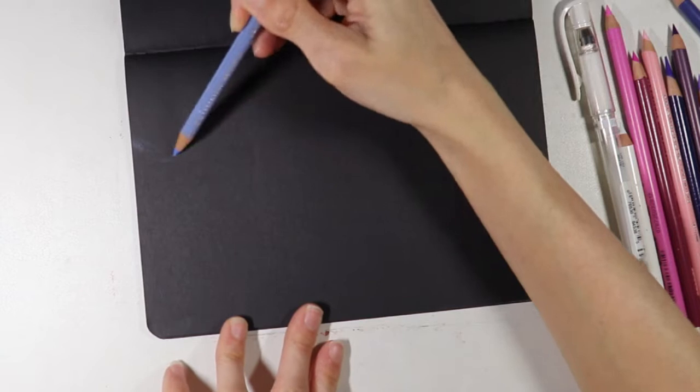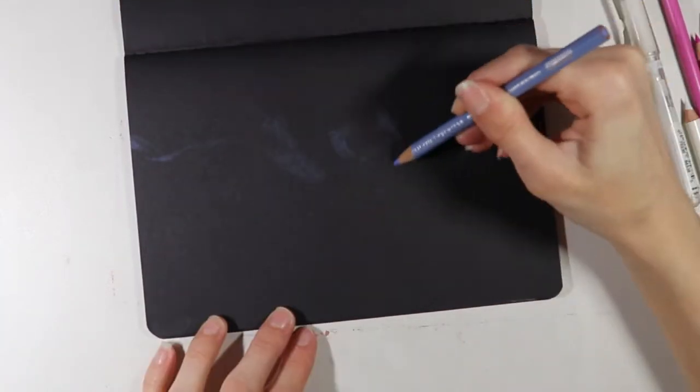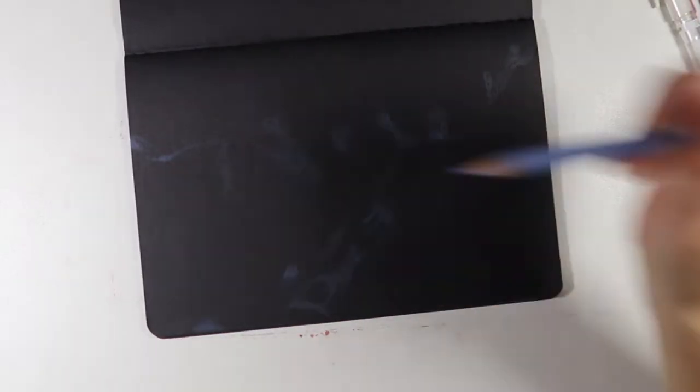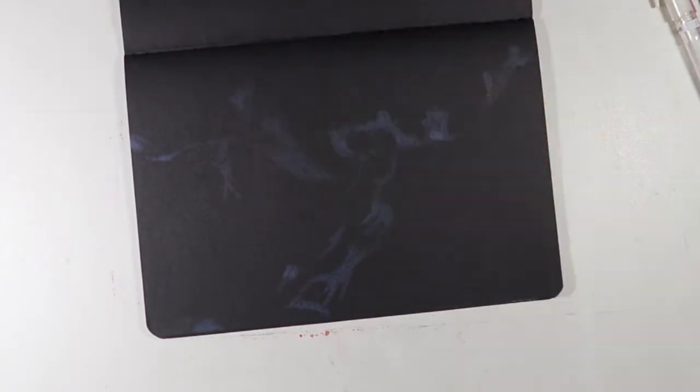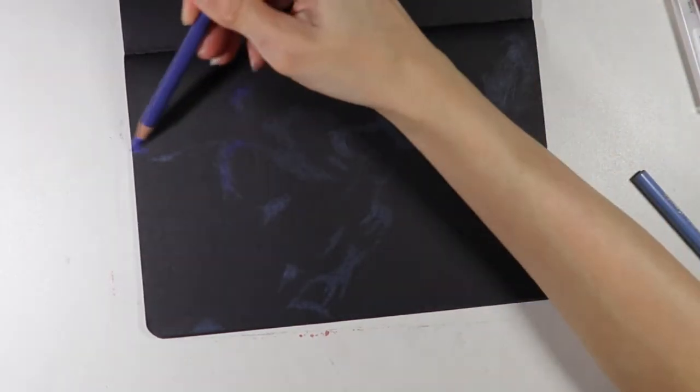I started off with my light blue violet pencil and just went in and created some general shapes of where the clouds and nebulas were going to be and I kind of just colored lightly, I want to say light or medium pressure, in circular motion so that I don't get any lines in my end result. The shapes are really kind of strange looking and almost smoke-like, but I just went with it and followed the reference photo.